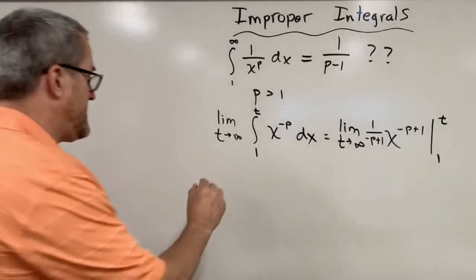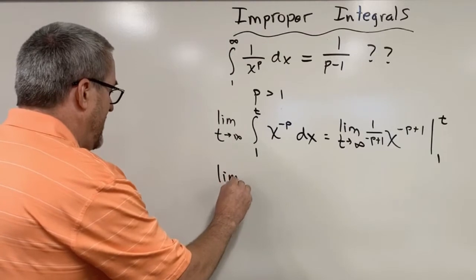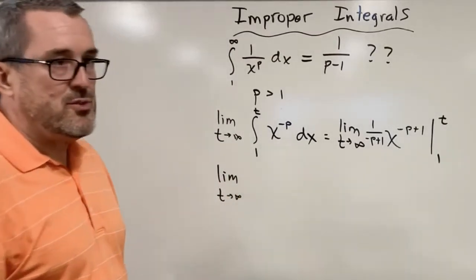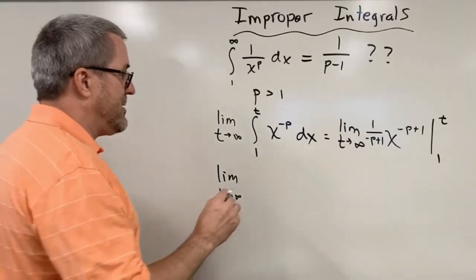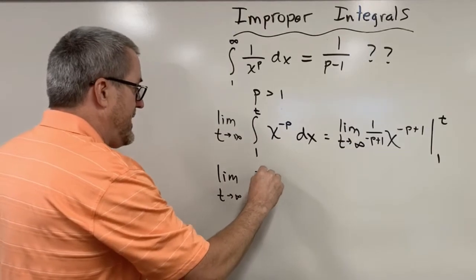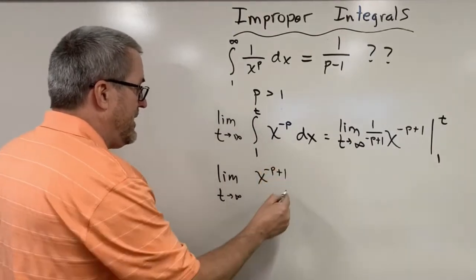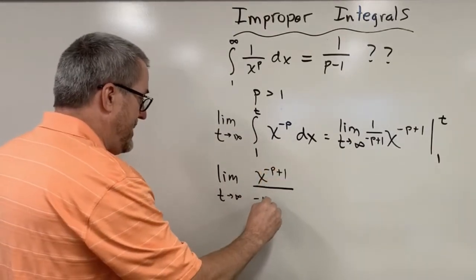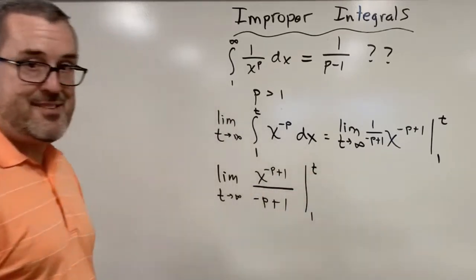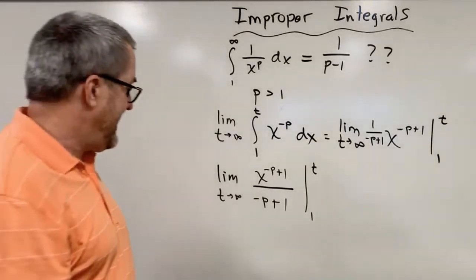Now let's just do some algebraic work here in hopes of making our efforts a little bit easier. I'm going to do two things. The first thing I'm going to do is just write this as a single fraction. We're going to say x to the negative p plus one divided by negative p plus one. Evaluate this from one to t. Don't forget that fundamental theorem is still going to be coming in.